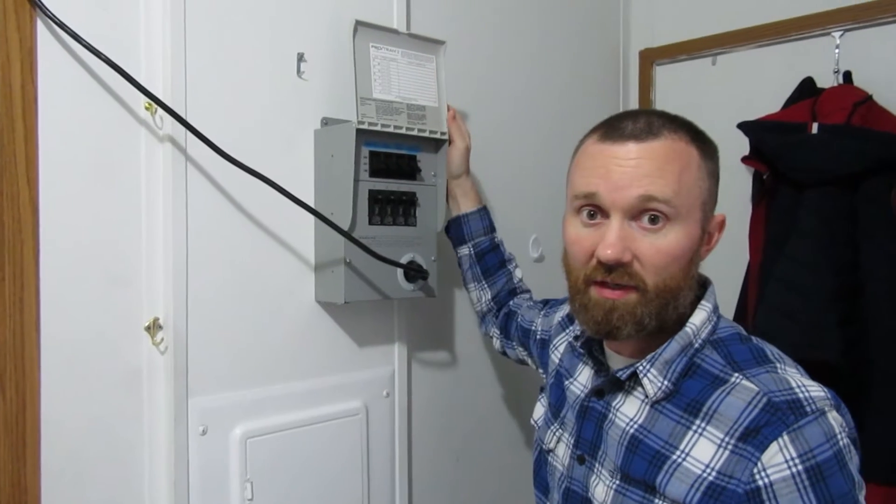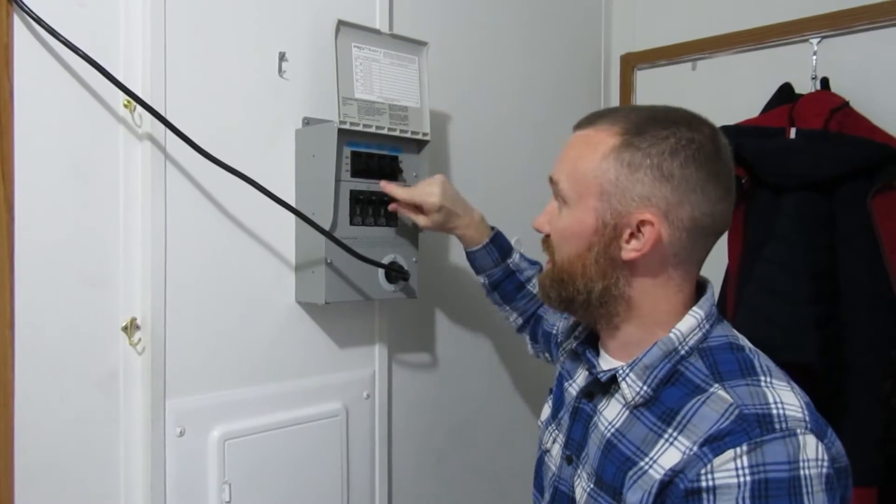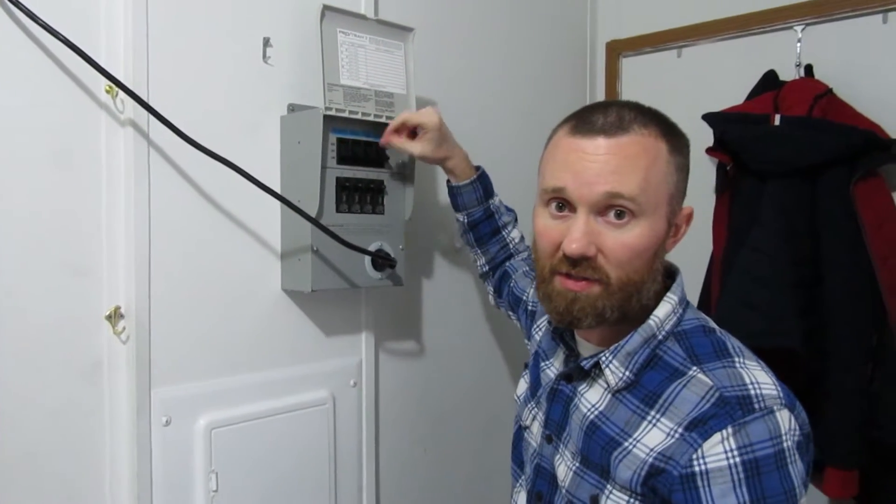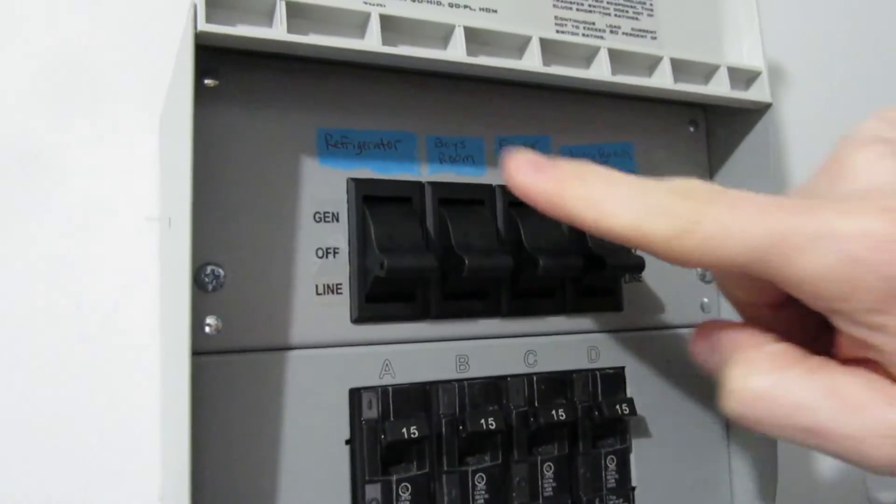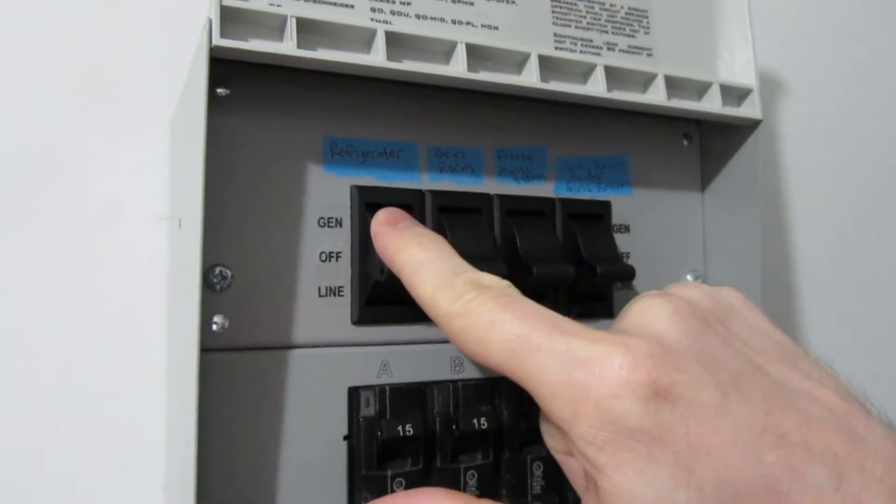And then all we have to do to get power to the house is flip these four switches up. And you can see these four switches right here, they power the refrigerator, the first one.